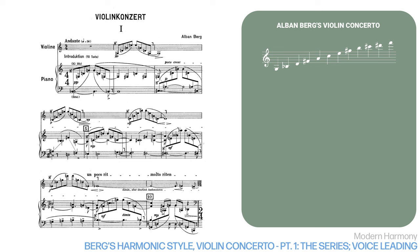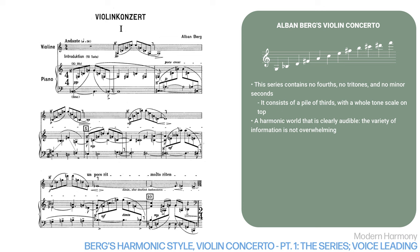Here's the series Berg used for the Violin Concerto. You will note that it contains no fourths, no tritones, and no minor seconds. It consists of a pile of thirds with a whole-tone scale on top. This creates a harmonic world that is definitely clearly audible. The variety of information is not overwhelming, as it is in a lot of other serial music. We would expect a piece based on this series to have lots of triads and seventh chords, as well as whole-tone scale passages. And indeed, Berg's Violin Concerto does.